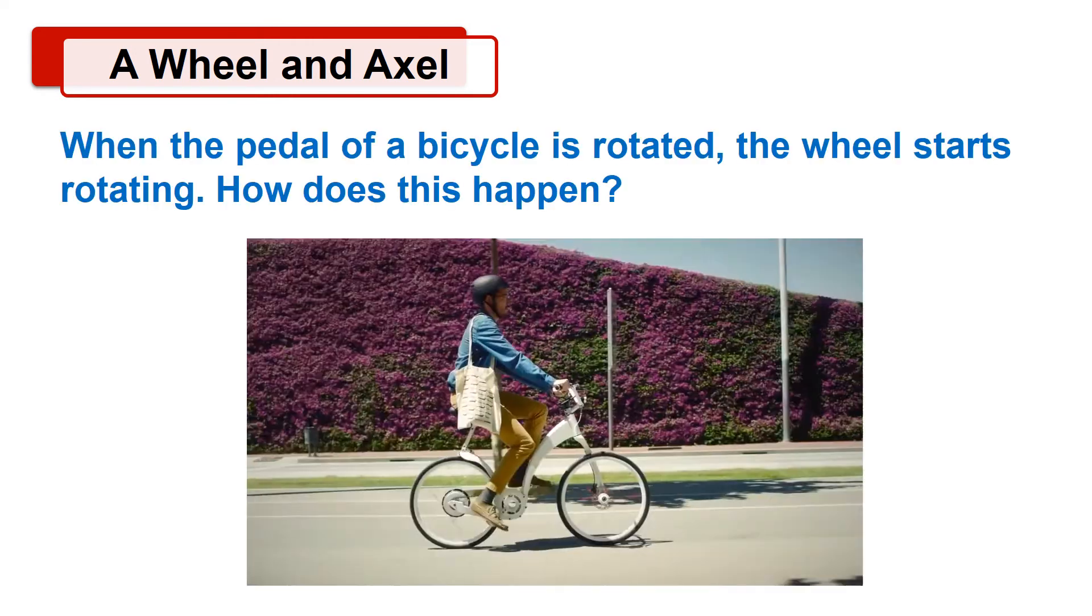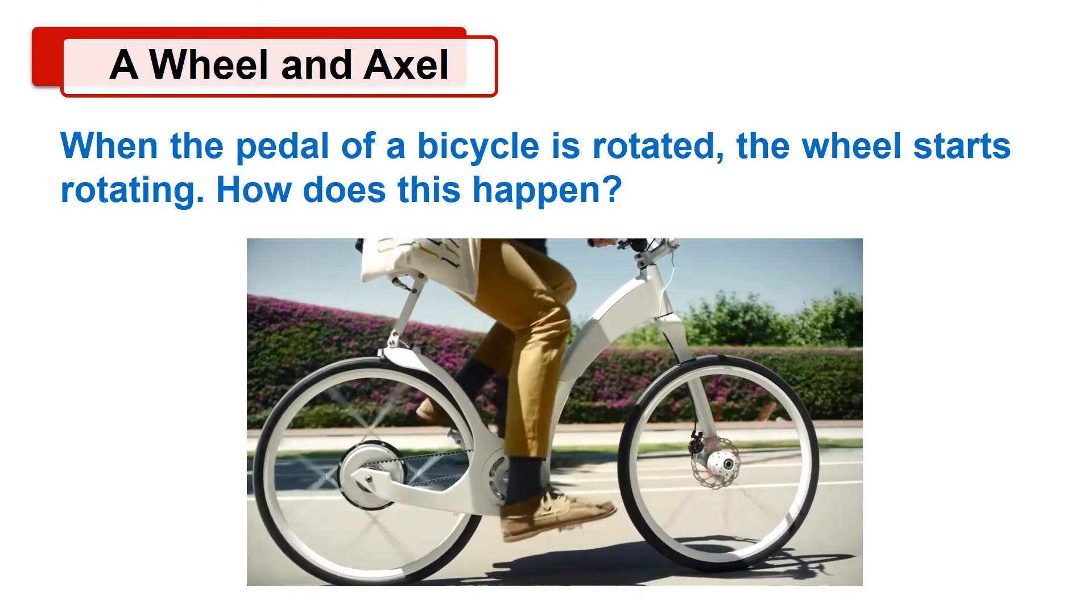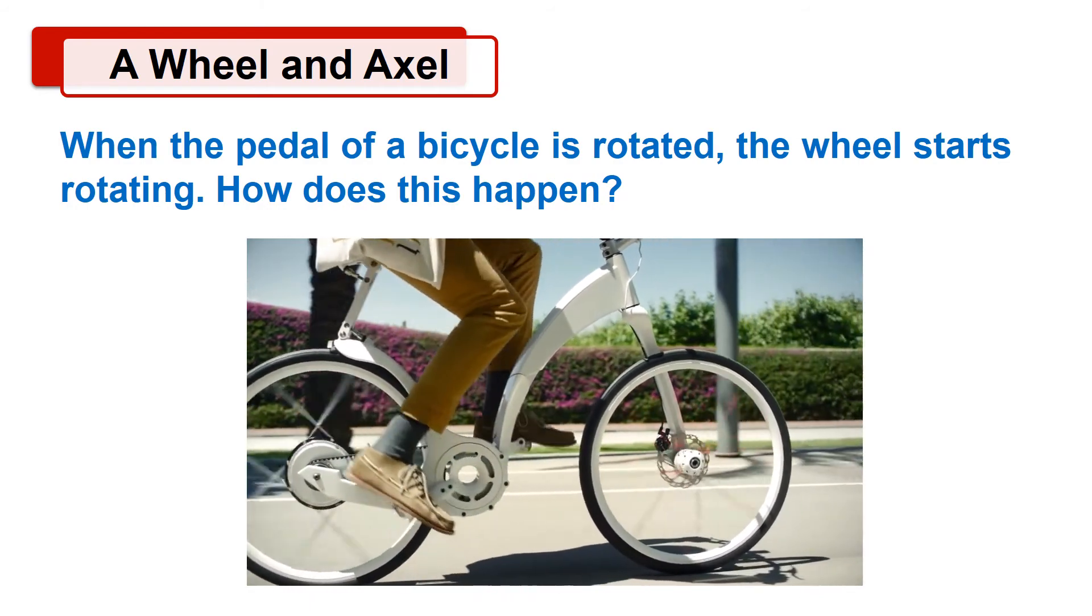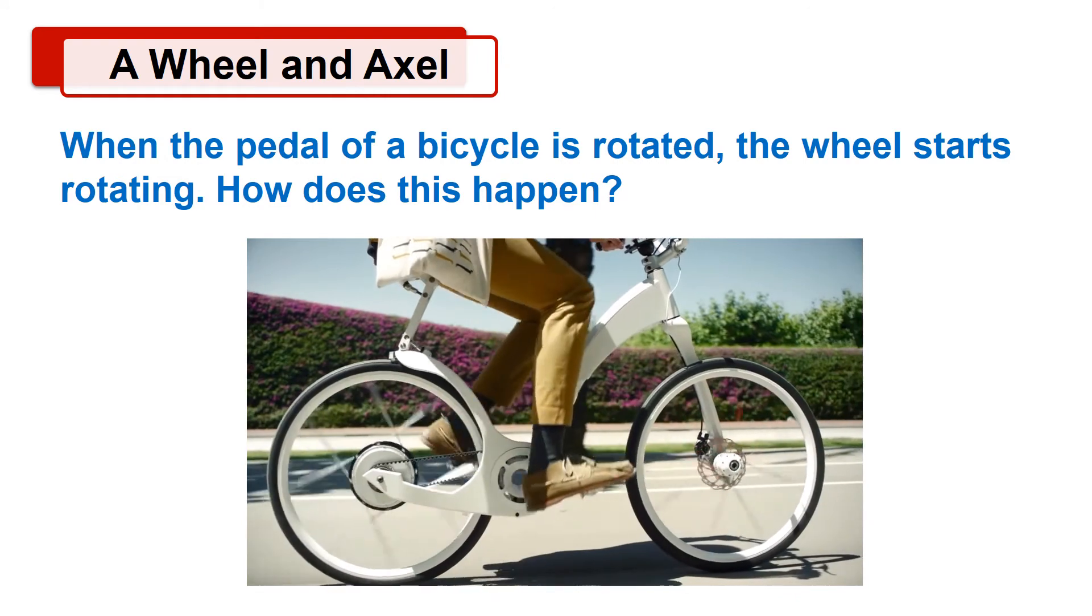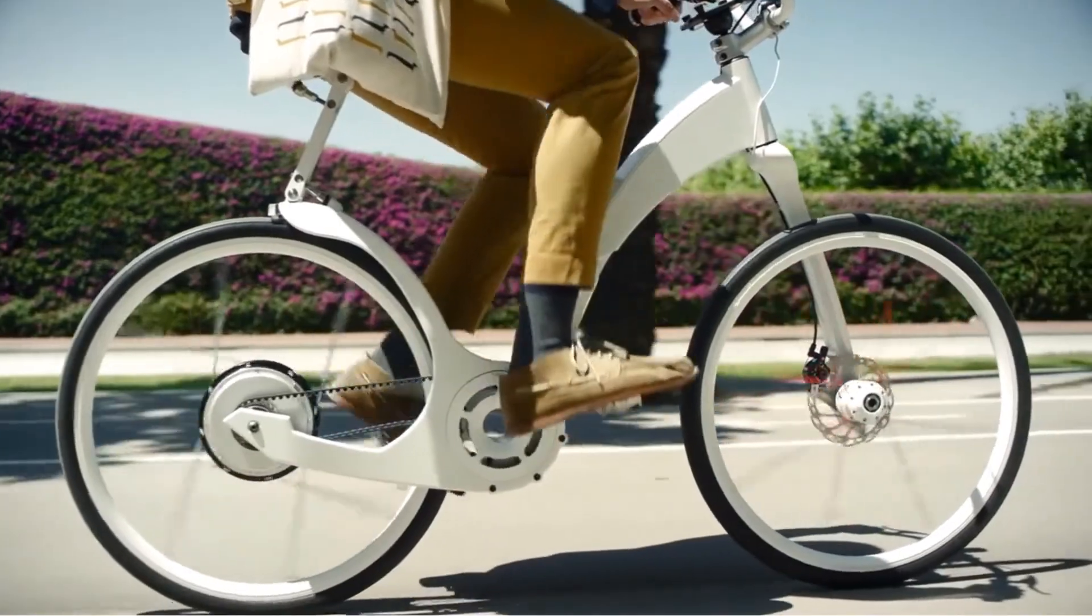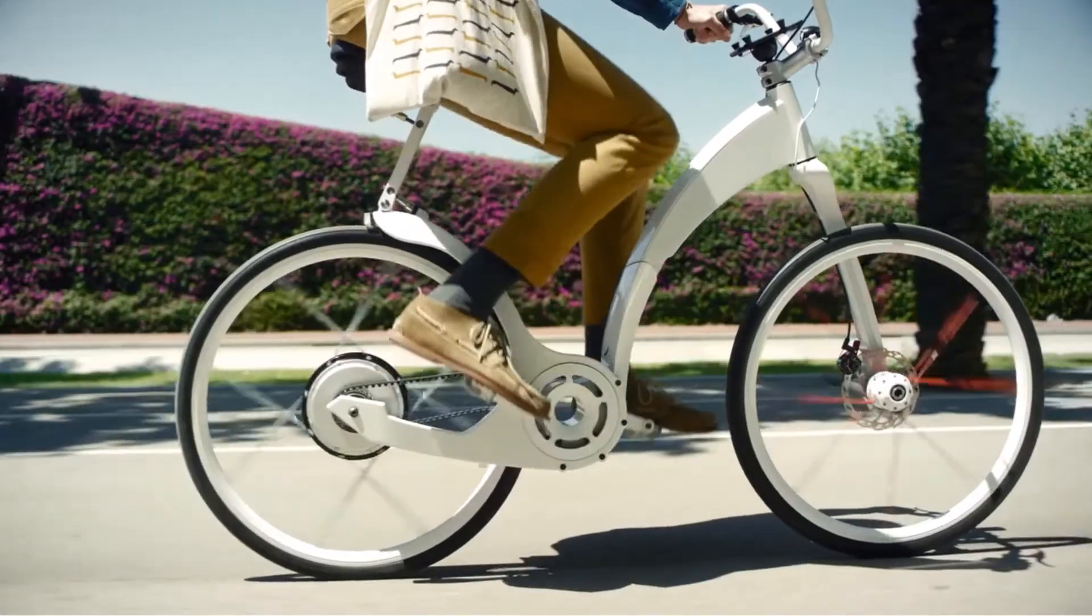Can you tell me, when the pedal of a bicycle is rotated, the wheel starts rotating. How does this happen? We know the wheel of the bicycle is located on the rod called axle of the wheel. We connect this wheel and pedal with the help of a chain. Therefore, when the pedal of a bicycle is rotated, the wheel starts rotating.